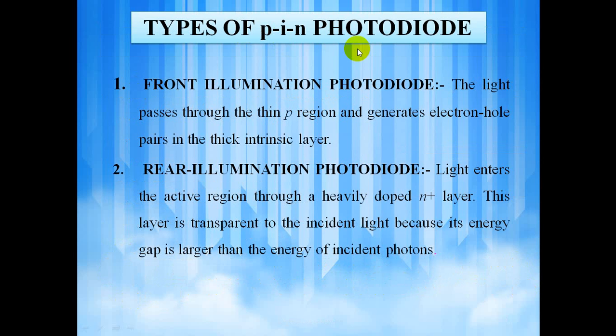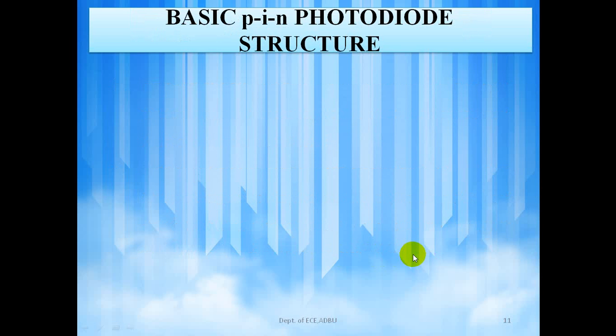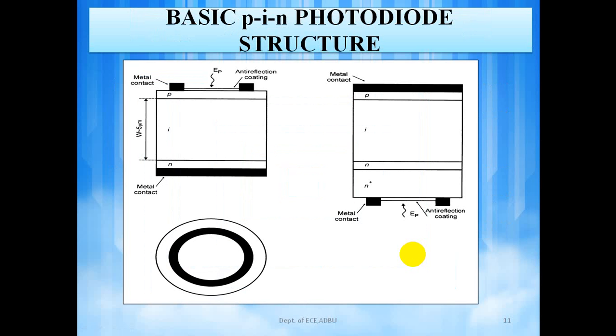There are two types of PIN photodiode. The front illumination photodiode and the rear illumination photodiode. Front illumination photodiode is the one where the light passes through the thin P region and generates electron hole pairs in thick intrinsic layer. And the rear illumination photodiode is the one where the light enters the active region through a heavily doped N plus layer. This layer is transparent to the incident light because its energy gap is larger than the energy of incident photons. These are the basic PIN photodiode structures that we have seen just now.